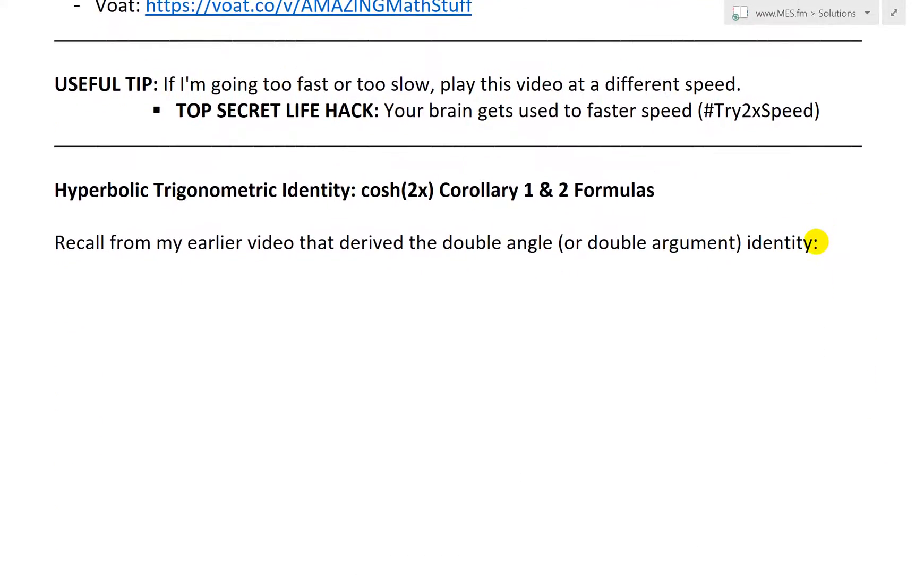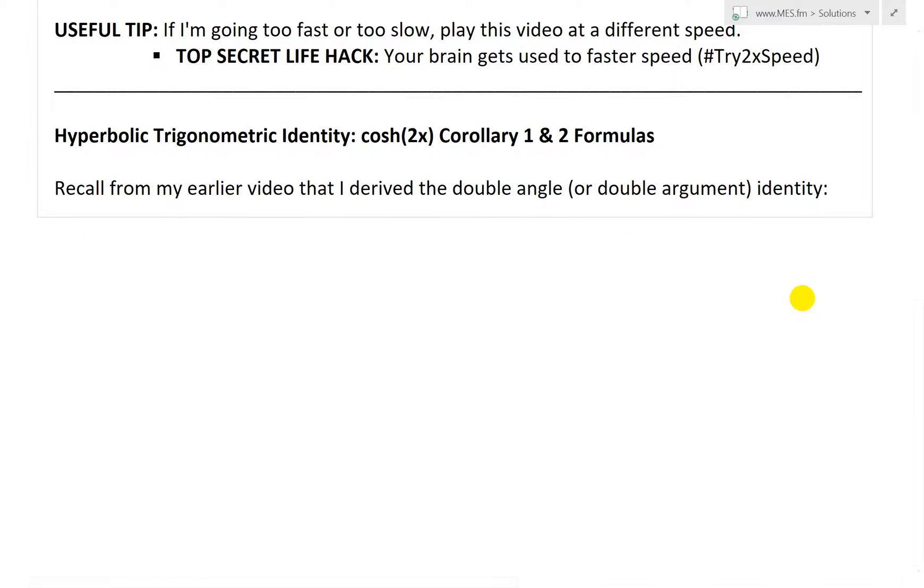Let's just jump right in. So recall from my earlier video that I derived a double angle or double argument identity. This is one of my earlier videos, so make sure to check that one out. The cosh(2x) equals cosh²x plus sinh²x, like that.